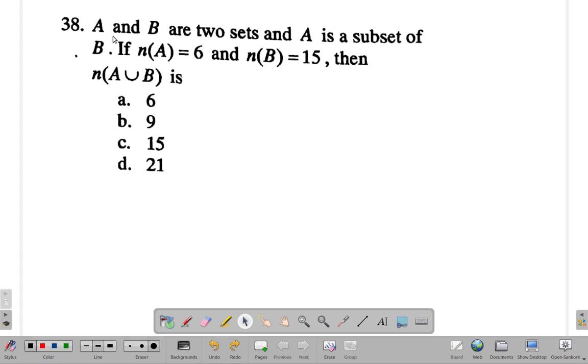Let's work it out. A and B are two sets and A is a subset of B. Okay, so let's see what happens here. We have two sets, A is a subset of B, so A is within B. This is A, this is B.